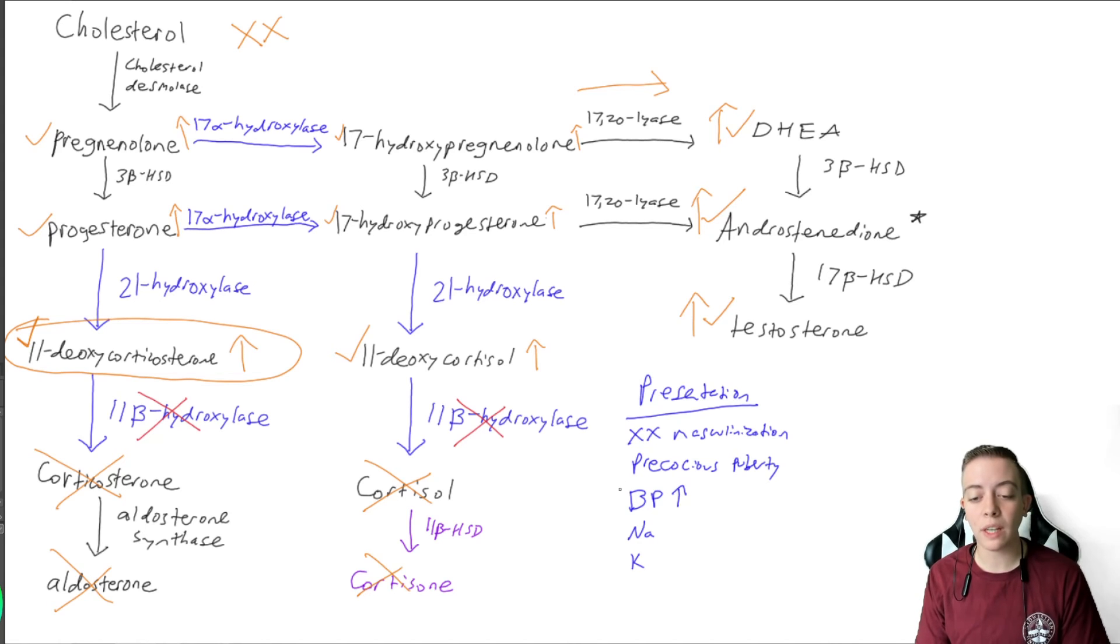When we see this in infancy, they're going to present with hypertension. Hypertension and babies don't usually have hypertension. So if you have a baby with high blood pressure, this is something you might need to look at. If you remember, 21-hydroxylase deficiency had low blood pressure because we didn't have aldosterone or 11-deoxycorticosterone. But now that we do have this mineralocorticoid, we are going to have high blood pressure.